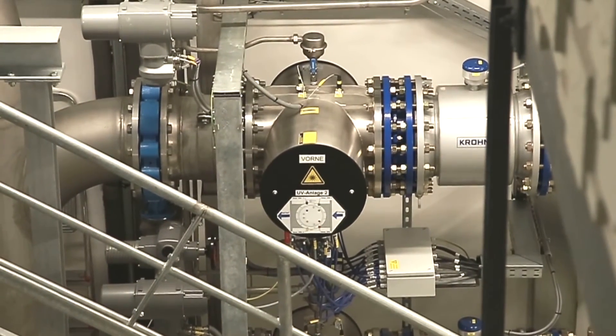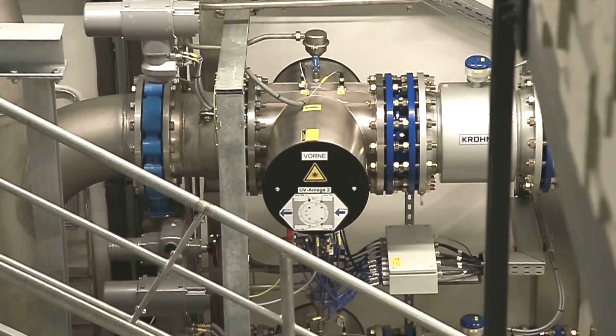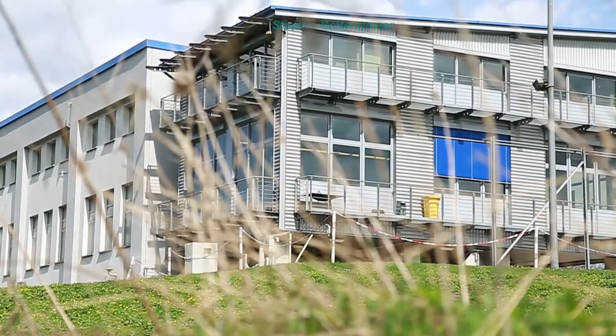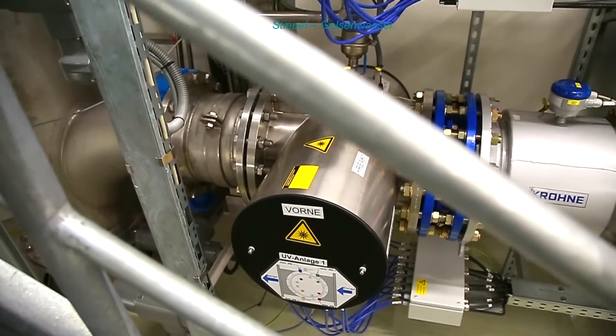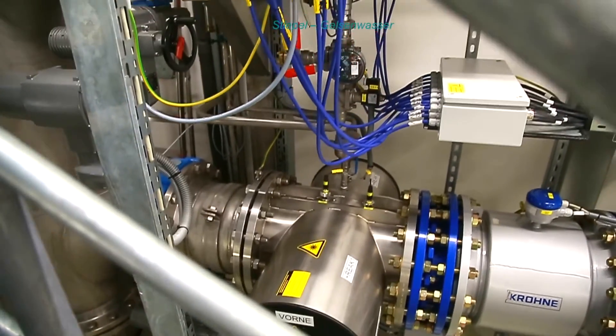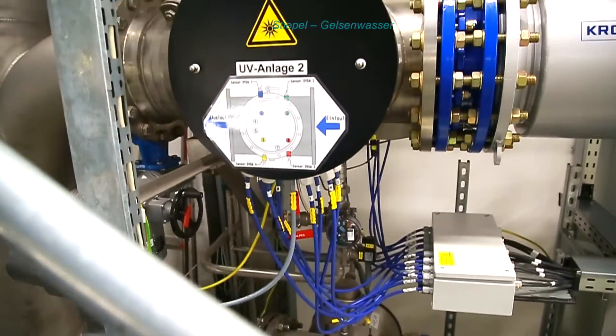A great benefit of the inline design is the small footprint. The water plant in the German Ruhrgebiet is a good example of a retrofitted UV solution. These two units are treating 1,200 cubic meters per hour in total.